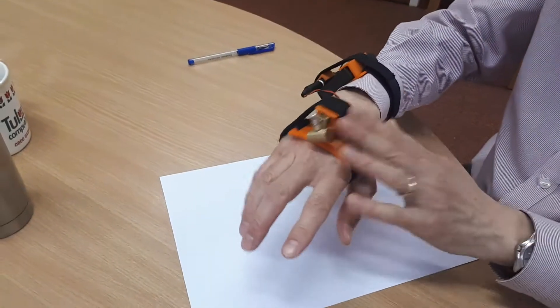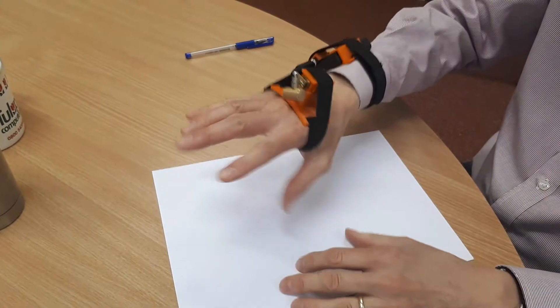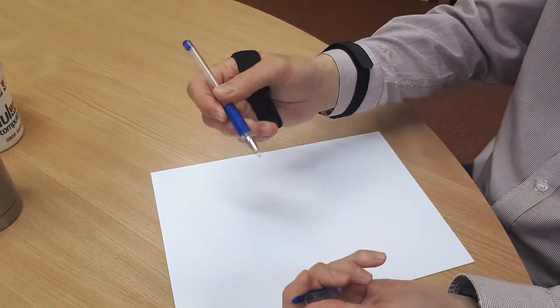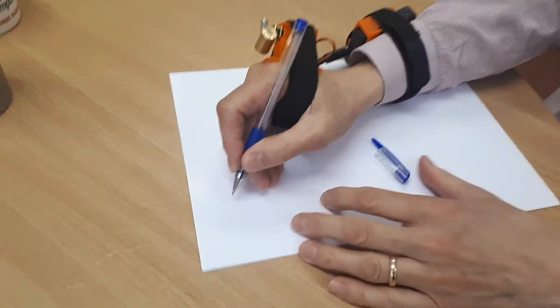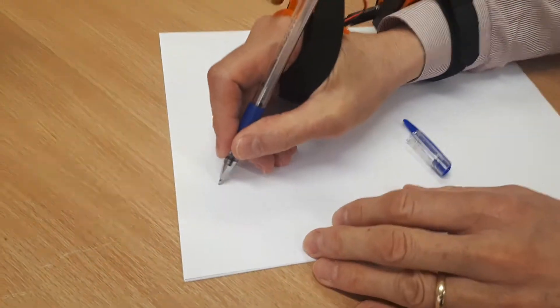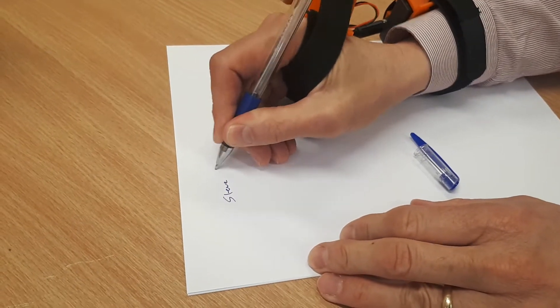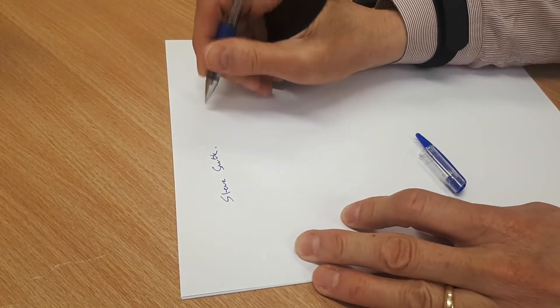To give an indication of the effect this has on control of the hand, I've got here a pen. Without the device on, I can write my name as you'd expect and even do a simple drawing of a circle.